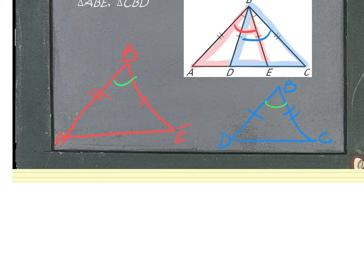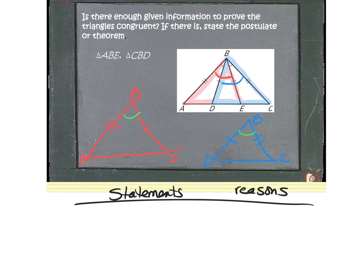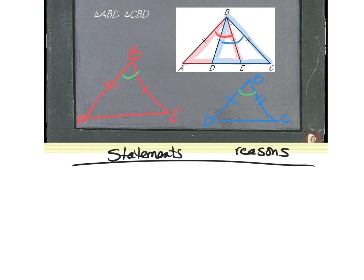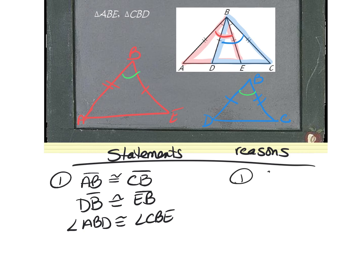Setting up statements and reasons for the proof: your quiz proof will have the given spelled out, so list everything. Statement one lists all congruency marks: AB is congruent to CB, DB is congruent to EB, and angle ABD is congruent to angle CBE. You must use three letters for angle B since there are multiple angles at that vertex.